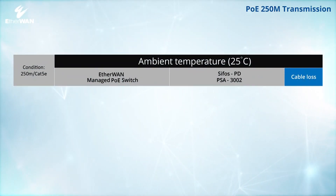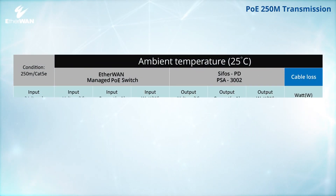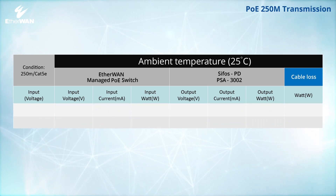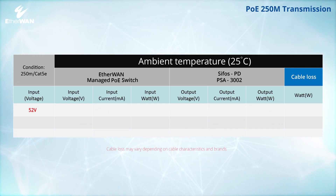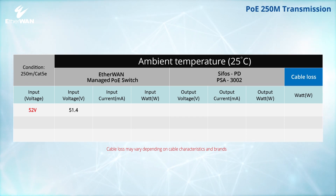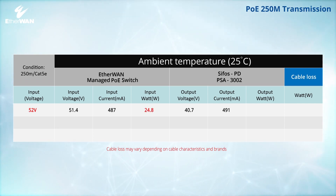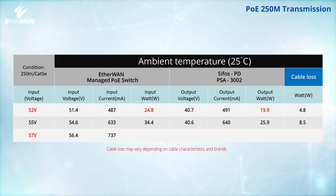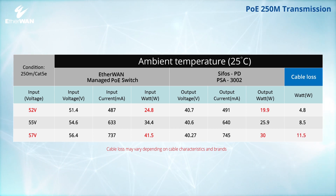PoE typically loses power over distance, and the power received is determined by the input power. If input power is 52 volts and input wattage is 24.8 watts, the powered device will receive 19.9 watts. If power input is 57 volts and input wattage is 41.5 watts, the powered device will receive 30 watts, with a cable loss of 11.5 watts.